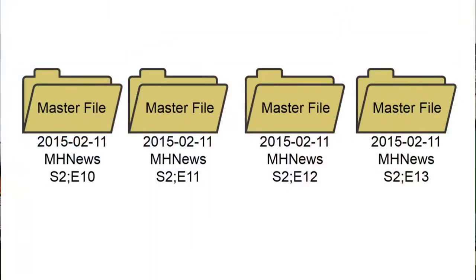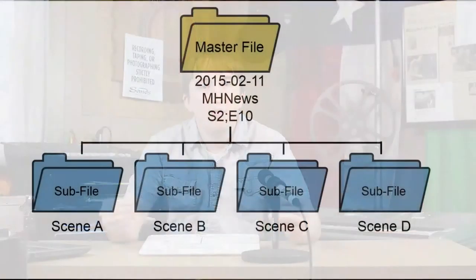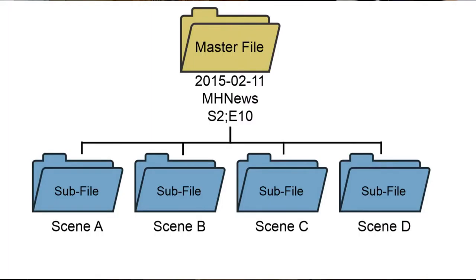When I'm importing my footage at the end of the day, rather than just hitting import and having a bunch of files only marked with the date I imported them, I'll first create a file for the day. Using MH News as an example, I'll create a file with the date of production followed by the title of the project. If I worked on multiple projects that day, I'll create multiple master files, each with the date of production and title of the project. After I create these master files, I'll go into each master file and create multiple subfiles, one subfile for each scene we shot, each titled with a letter — A, B, C, and so on. Once these subfiles are created, I can finally import my footage.